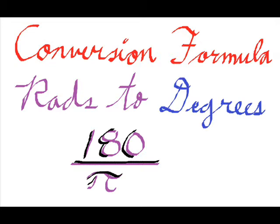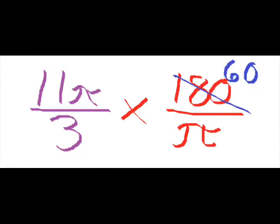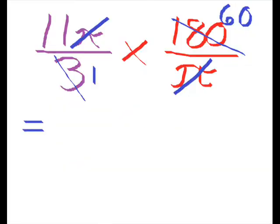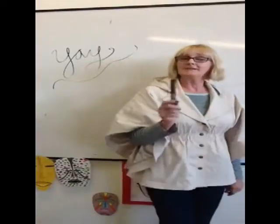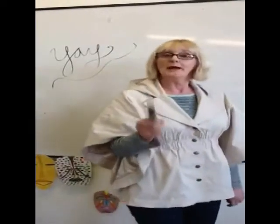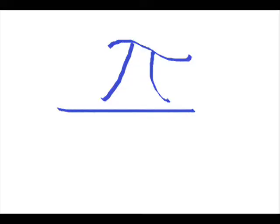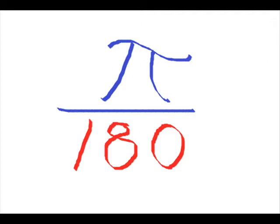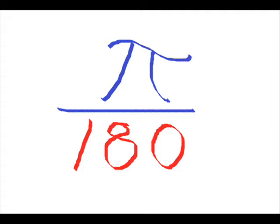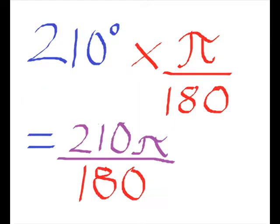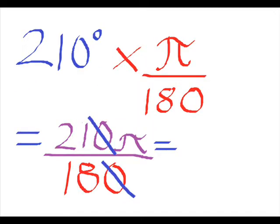Radians to degrees: use 180 over pi, cross multiply and then see what you got. Some terms cancel out so you won't have a lot. Degrees can be changed to the radians you desire — just put pi over 180 and make sure it's higher. Cross multiply, let the numbers divide, now you have your radian — your answer includes the pi.